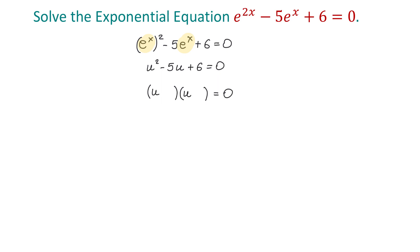The two numbers whose sum is negative 5 and the product is positive 6 are negative 2 and negative 3. Then in these parentheses, we will have u minus 2 and u minus 3.